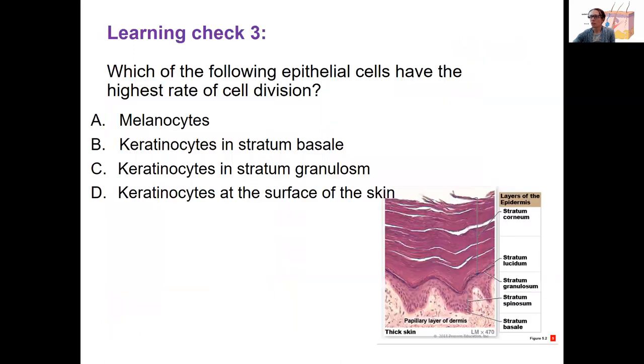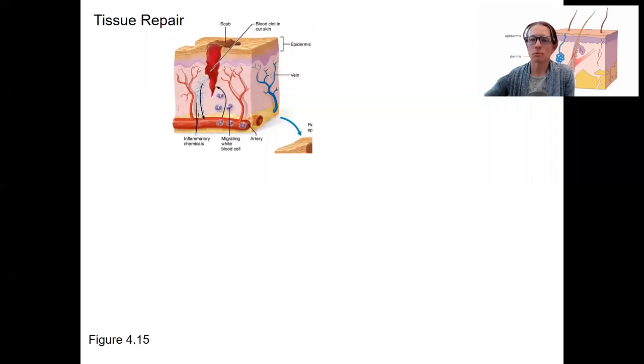A learning check for you here: which epithelial cells have the highest rate of division, so mitosis? Keratinocytes, those are the keratin producing cells in epithelium, right? However, so we talked about epithelial tissue growing, the rest of your dermis is able to do stuff still to help you with protection.